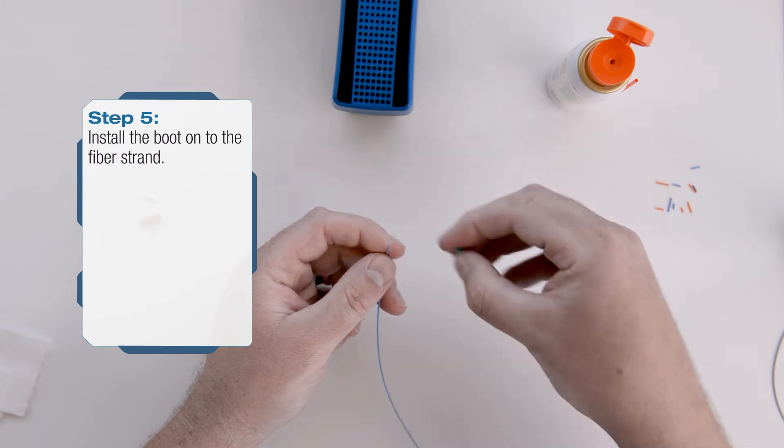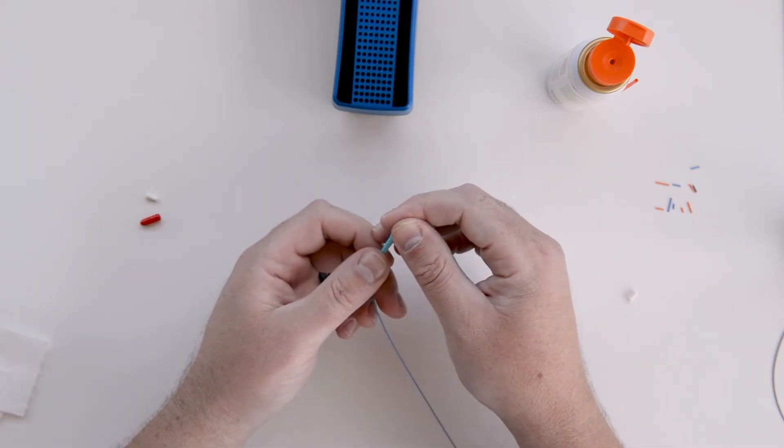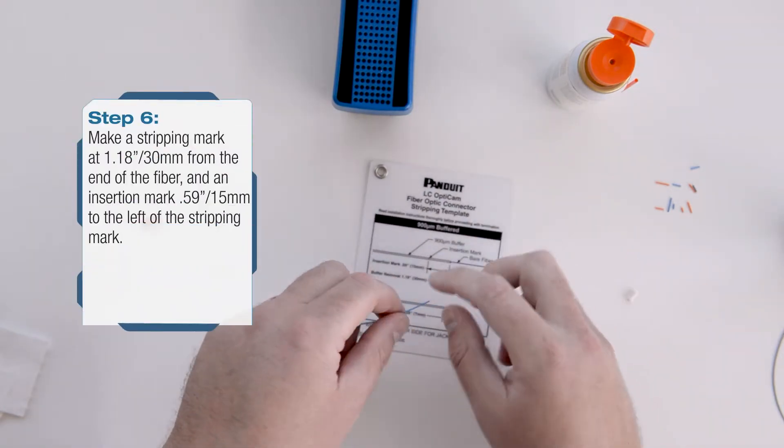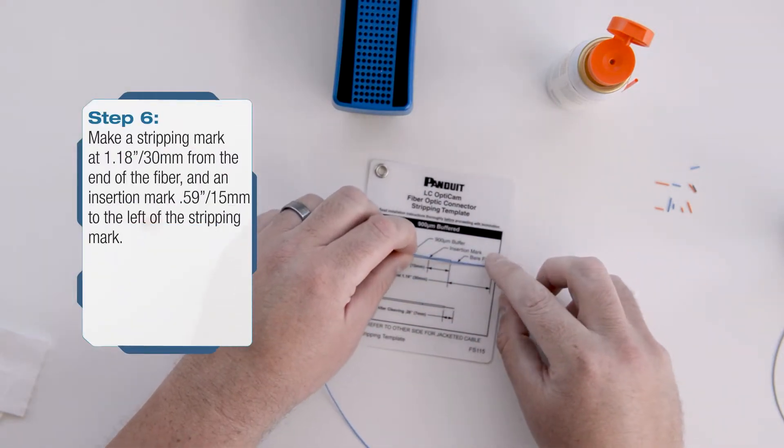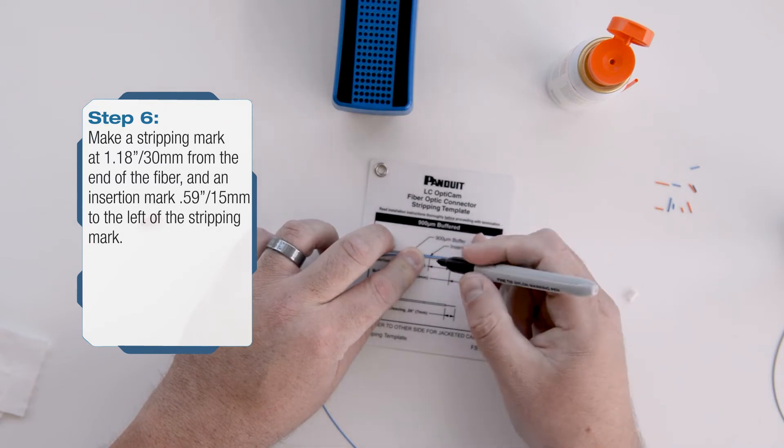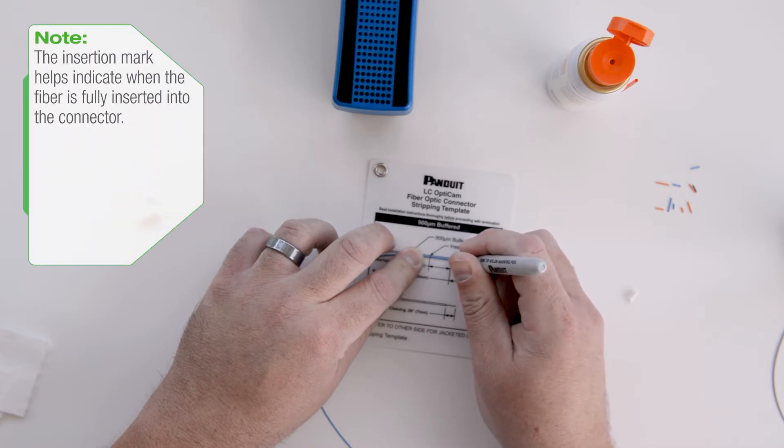Insert the fiber strand into the narrow end of the boot, then slide the boot back along the cable. Using the LC template cards provided with every OptiCam kit, make a stripping mark on the buffer at 1.18 inches or 30 millimeters from the end of the fiber strand. Make an insertion mark on the buffer 0.59 inches or 15 millimeters to the left of the stripping mark.